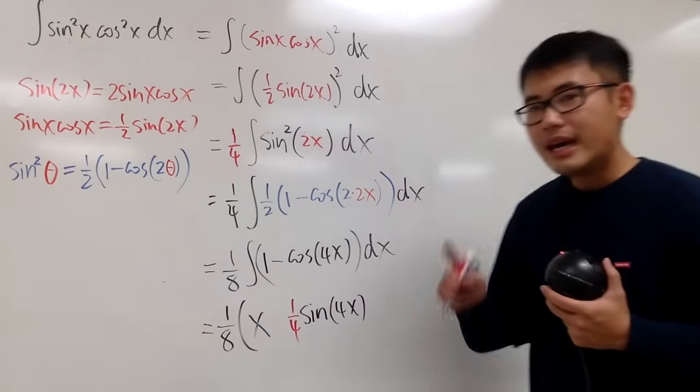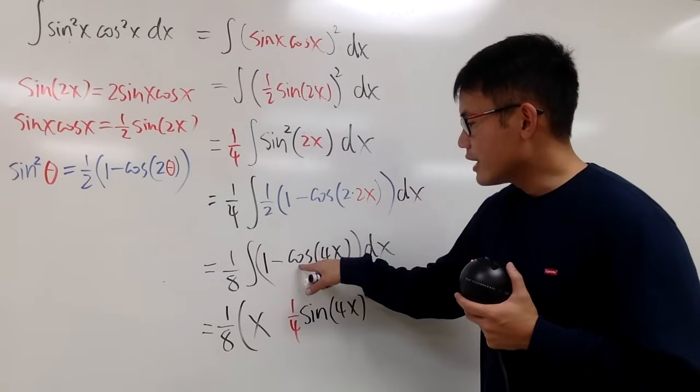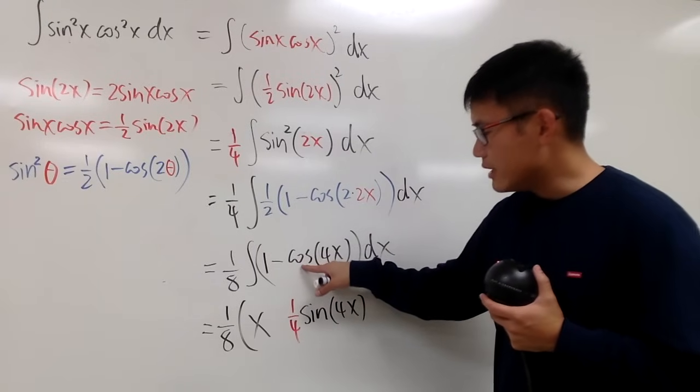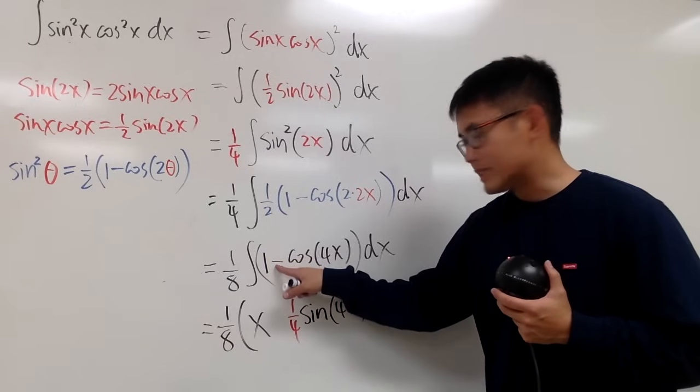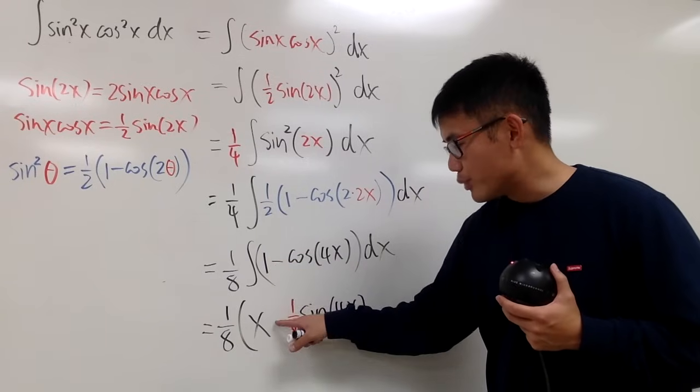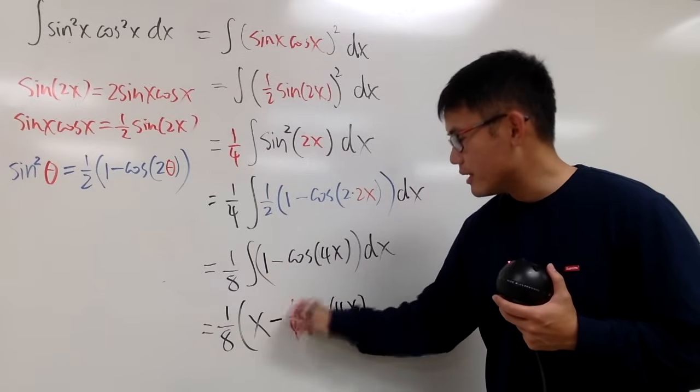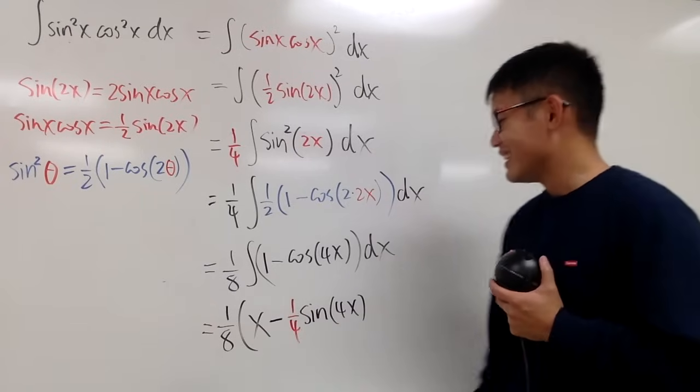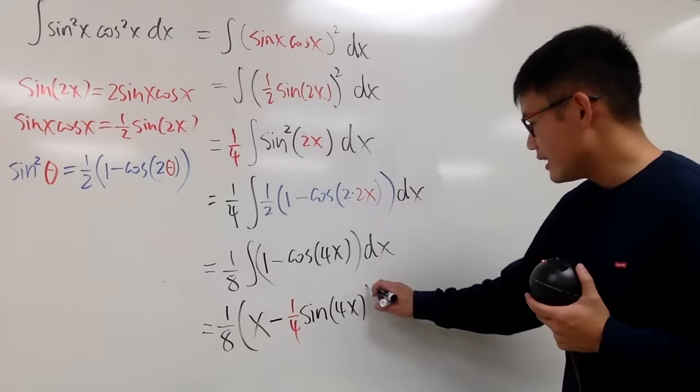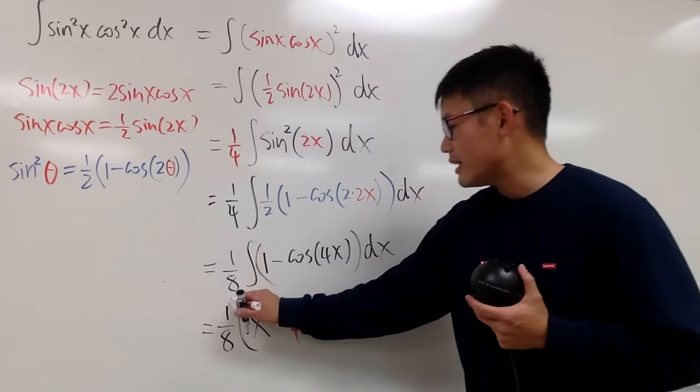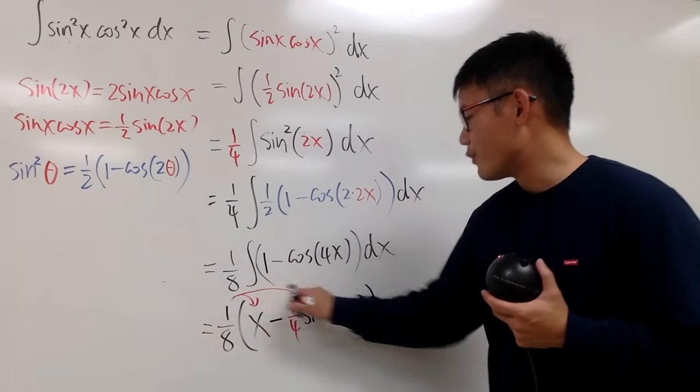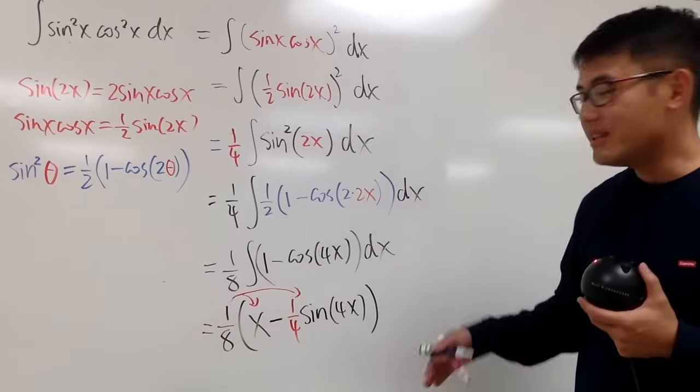And lastly, once again, the integral of cosine is positive sine. But originally, this was subtracting. I will have to bring down the subtraction, okay? So this is a minus. So this is pretty much it. And let me close that because in the end, I would like to distribute the 1 over 8. And then I'll put down plus c at the very end.